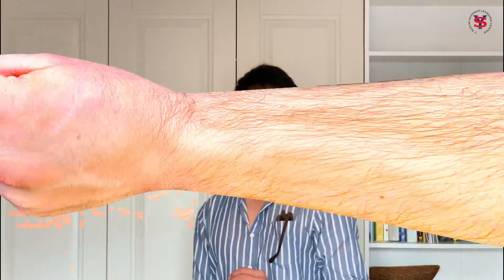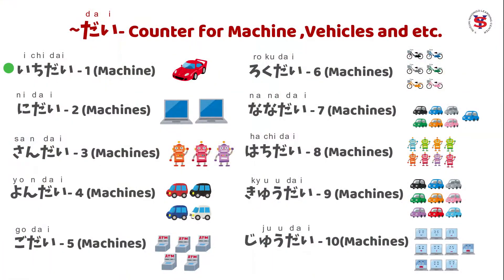Next naman is machines and vehicles. So let's say magbibilang tayo ng kotse, makina, appliances, ganun. Ang counter suffix natin is dai. So that's ichi-dai, ni-dai, san-dai, and so on.